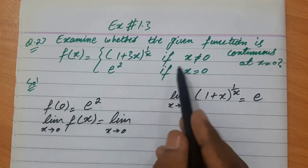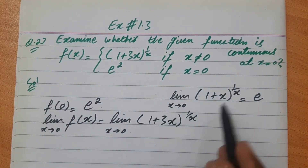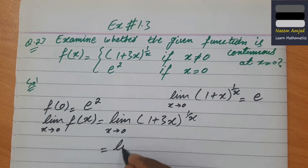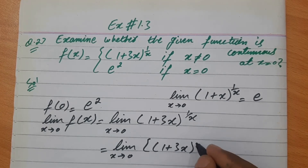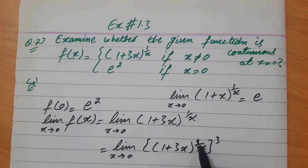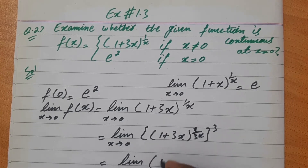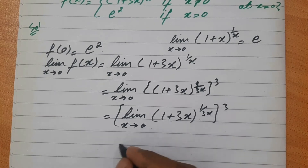limit x→0 पर: (1+3x)^(1/x)। इसे standard form में लाने के लिए — 3x का reciprocal 1/(3x) होगा। हम लिखते हैं: limit x→0 [(1+3x)^(1/(3x))]³ — यानी denominator में 3 लिखा और बाहर 3 लिखा जो cancel हो जाता है, 1/x वापस आ जाता है। Limit अंदर ले जाएं: (1+3x)^(1/(3x)) → e।